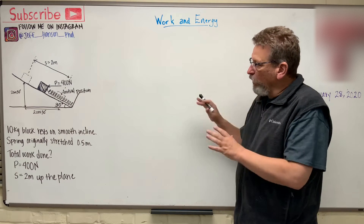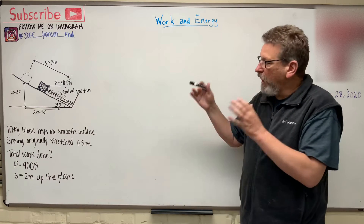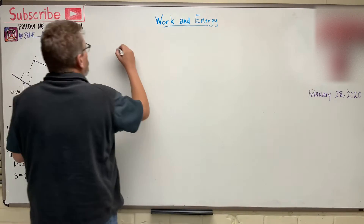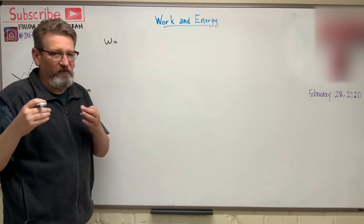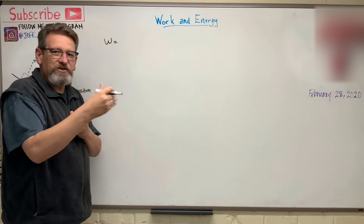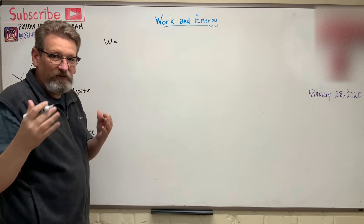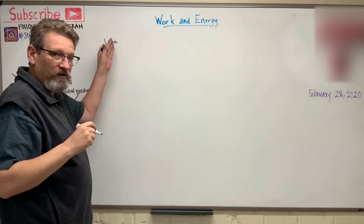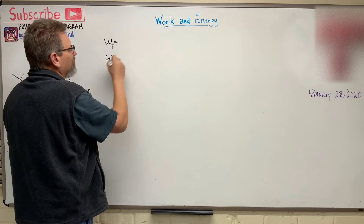We're going to start talking about the work equation. We need to find the total work done on an object. So what is work? We define work as some force that's going to cause some displacement on an object or a body. That can come from a couple of different things on these dynamics problems: number one, some kind of work done by a force, and secondly, some kind of work done by a spring.